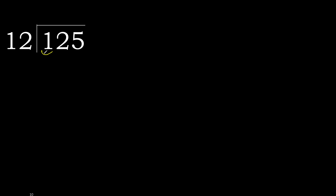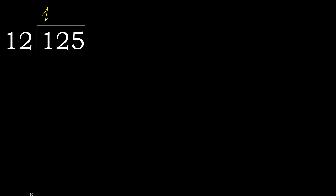125 divided by 12. 1 is less, therefore next. 12 is not less, therefore we work with 12. 12 multiplied by which number is nearest to 12 but not greater? 12 multiplied by 2 is greater; multiplied by 1 is 12. It is not greater, ok. 12 minus 12 is 0. Next. Eliminate 0 on this side.